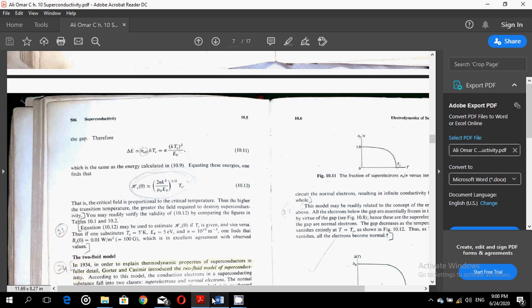Therefore, delta e is of the order of n effective ktc equal to n ktc squared over ef, which is the same as the energy calculated in equation 10.9. Equating these energies, one finds that hc0 is of the order of 2 n kt squared over mu0 ef, bracket power half into tc. That is, the critical field is proportional to the critical temperature. So we have a very useful relation between the critical field and the critical temperature, two of the important parameters of superconductors.